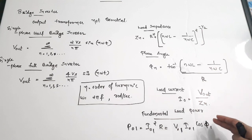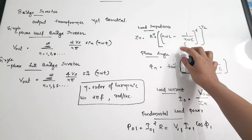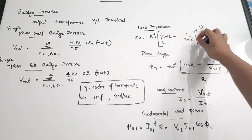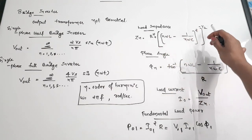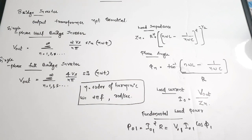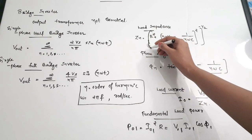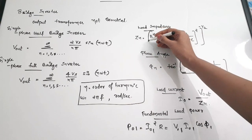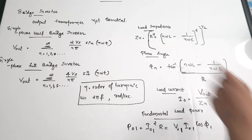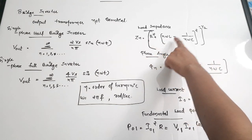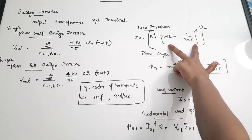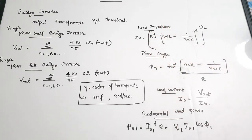Talking about load impedance, phase angle, load current, and power: the load impedance is given by Zn = [R² + (nωL − 1/(nωC))²]^(−1/2). If you know the values of L, C, R, and ω, you can find the load impedance.